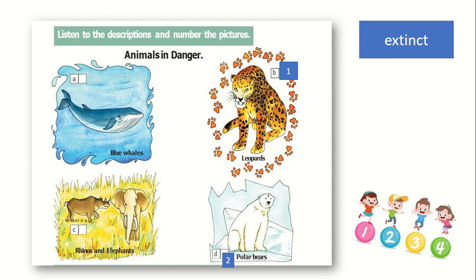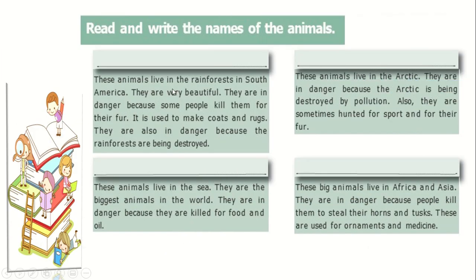Description number three: it is the biggest animal in the world and it is in danger because people killed them for food and oil. Which one? Blue whale — well done, excellent! This is number three. Description number four: these animals are hunted to use their horns and tusks for ornaments or jewelry. Which one? Rhinos and elephants — well done! This is number four.